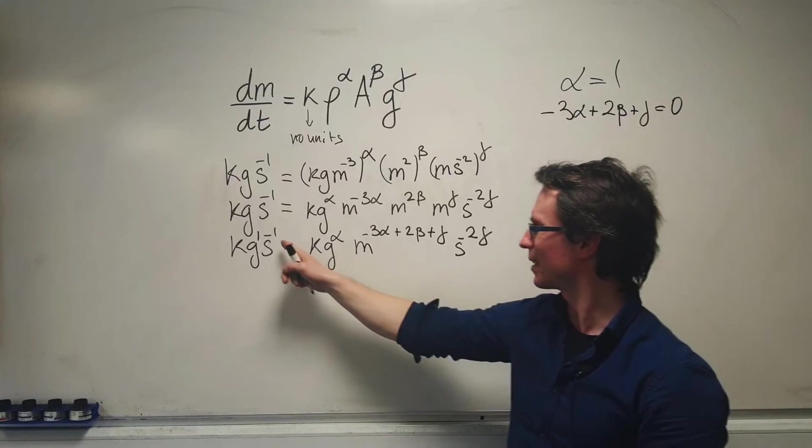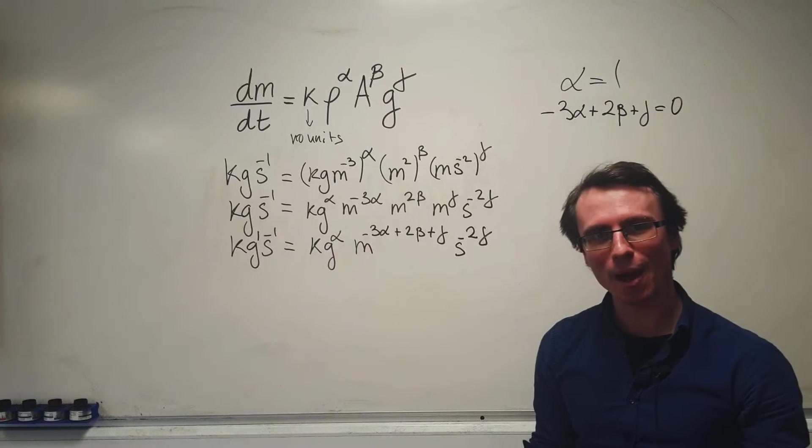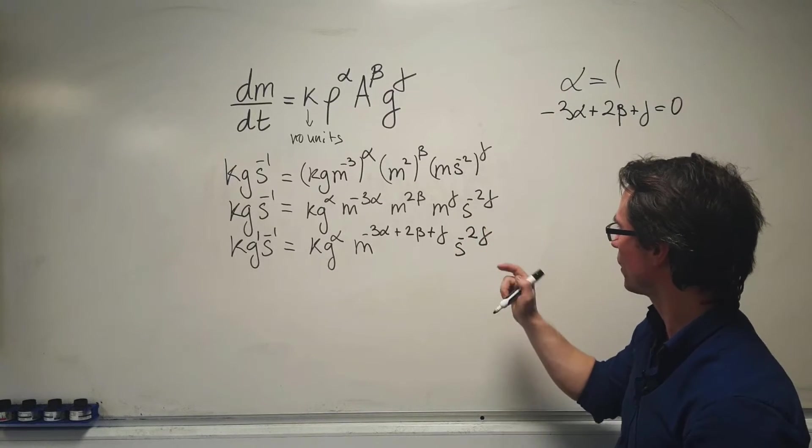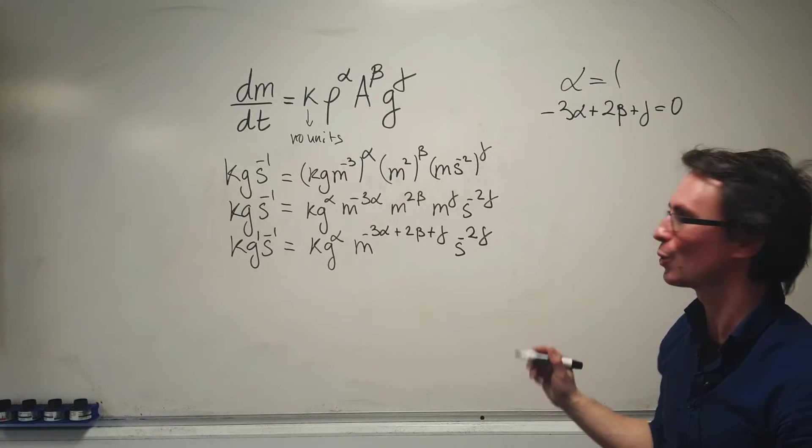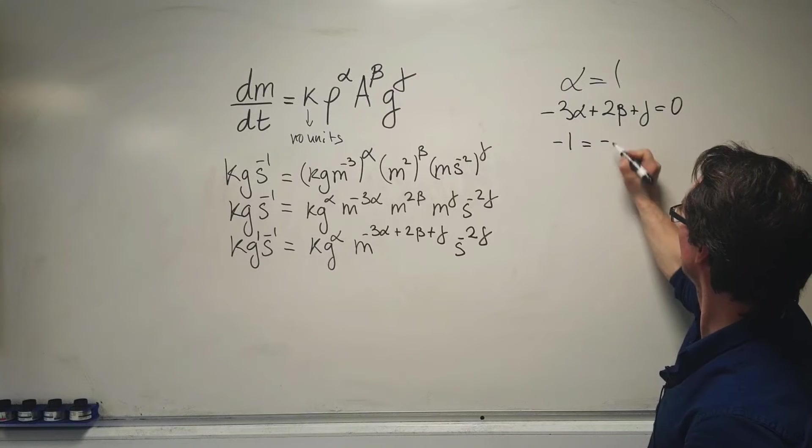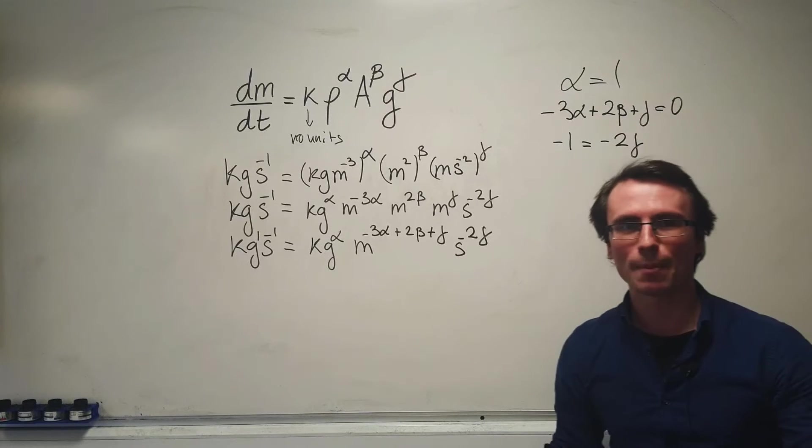Our final equation: -1, the power of the time unit, equals -2γ. So -1 = -2γ.